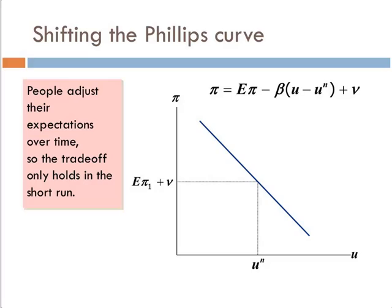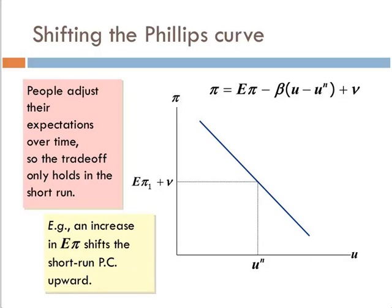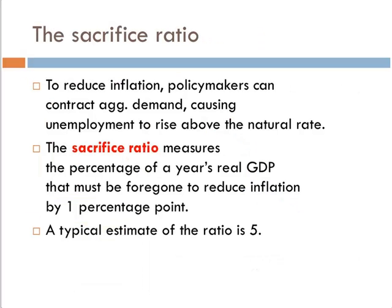Shifting this guy. What happens if people adjust their expectations over time? Let's say we have an increase in the expected value of inflation. What does that do? Shifts the Phillips curve up.